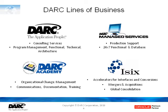DARK has four lines of business. The first is consulting services, which include program management, functional, technical, and application architecture. We also provide managed services, which include production support and 24x7 functional and database support. We also have the DARK Academy, which focuses on organizational change management including communications, documentation, and training. Our last line of business, ISIX, is proprietary software that provides accelerators for interfaces and conversions, commonly used in mergers and acquisitions and global consolidation.